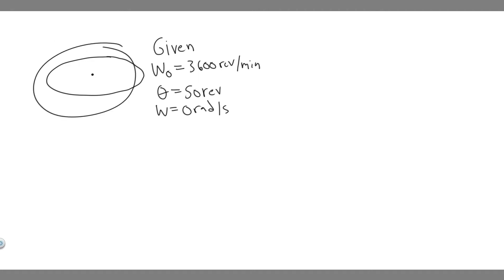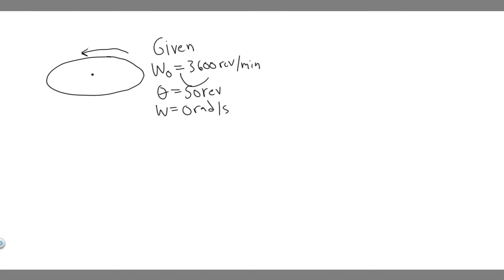So imagine this is our centrifuge right here, and we know it's going to be rotating. The first thing you always want to do for these problems is write down the variables we're given. This is going to be rotational kinematics, so we write down all the rotational kinematic variables. The first thing we're given is the initial angular velocity, omega zero, which is 3,600 revolutions per minute.